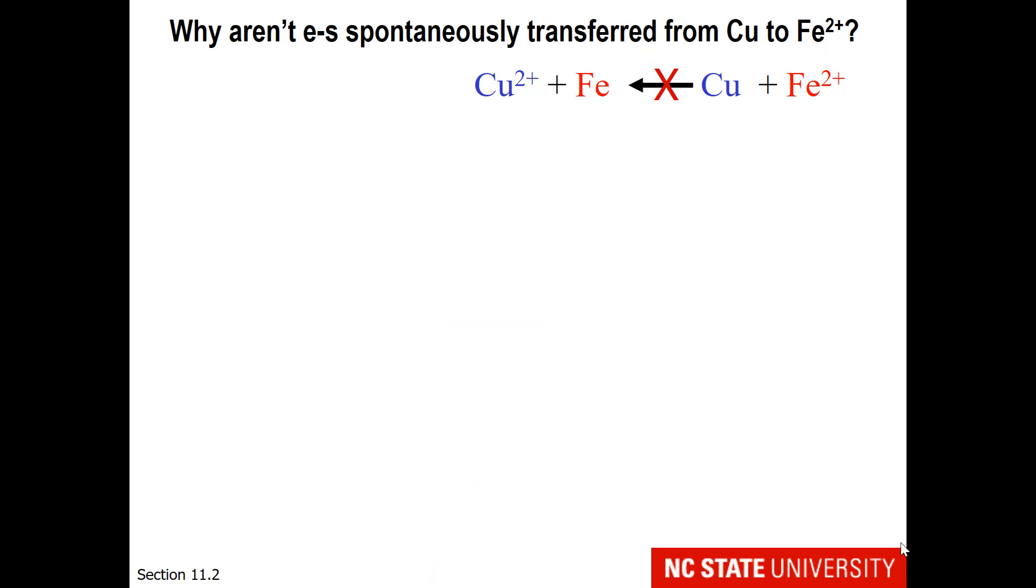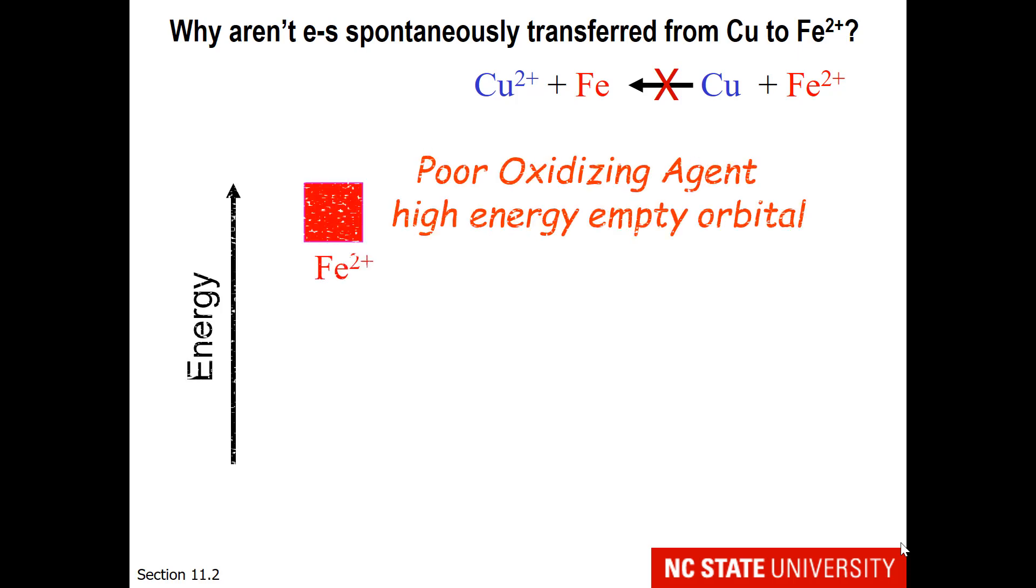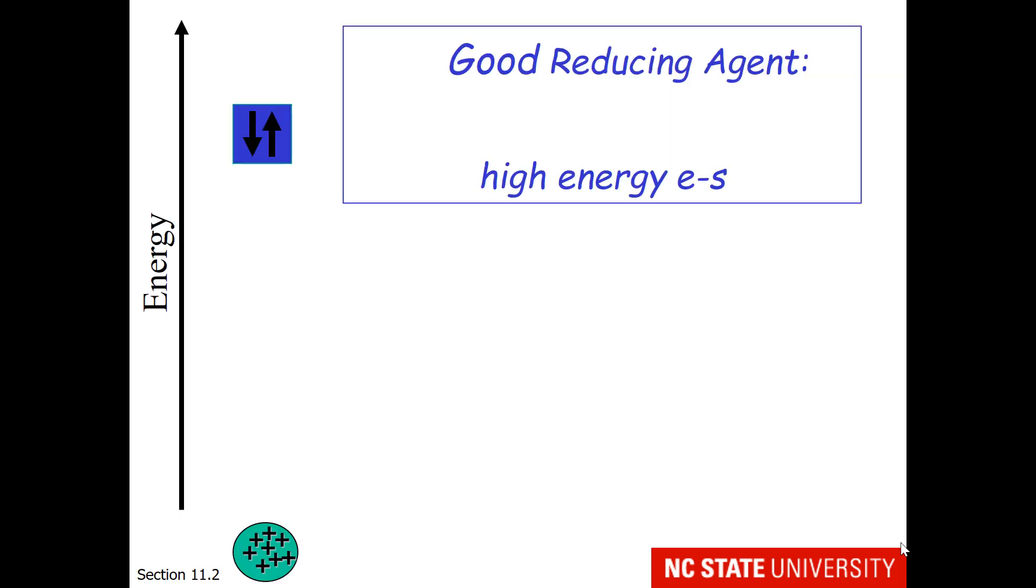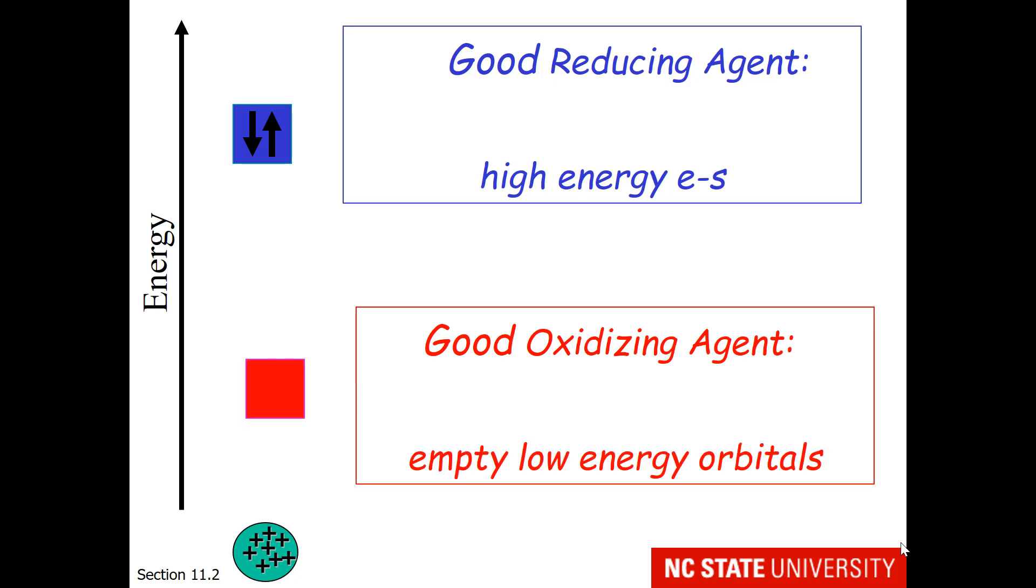You may wonder, can the reaction go the opposite direction? Could we take copper's electrons and add them to iron 2 plus? Well, iron 2 plus is a poor oxidizing agent. Its empty orbital is high in energy, whereas copper is a very poor reducing agent. It has very low energy electrons. So just like the raptor might find it hard to fly up to the tree and attack the opossum from below, it is non-spontaneous to jump electrons further away from the nucleus. So good reducing agents have high energy electrons, and good oxidizing agents have low energy empty orbitals.